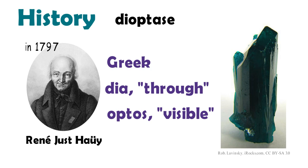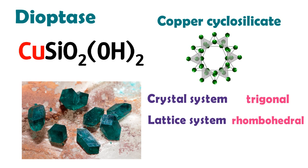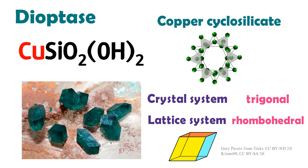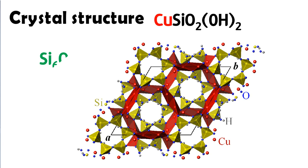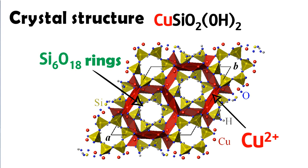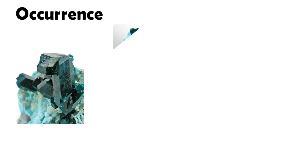These cleavage directions are visible inside unbroken crystals. Dioptase's formula is CuSiO2(OH)2. Dioptase is an emerald green to bluish green copper cyclosilicate mineral. Its crystal system is trigonal and the relative system is rhombohedral. Dioptase consists of SiO18 rings linked together by distorted octahedral copper divalent cations. Each copper ion is coordinated by four cyclosilicate oxygens and two water molecules. The copper ions result in the mineral's color.